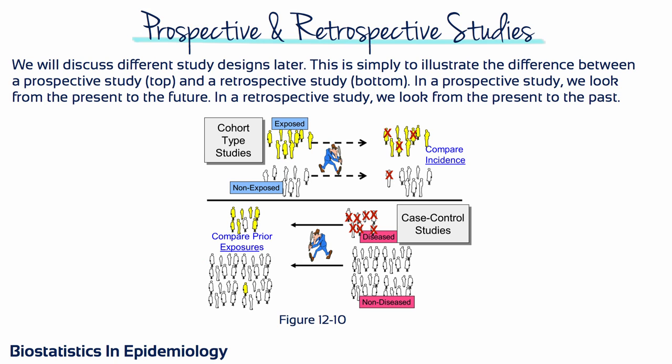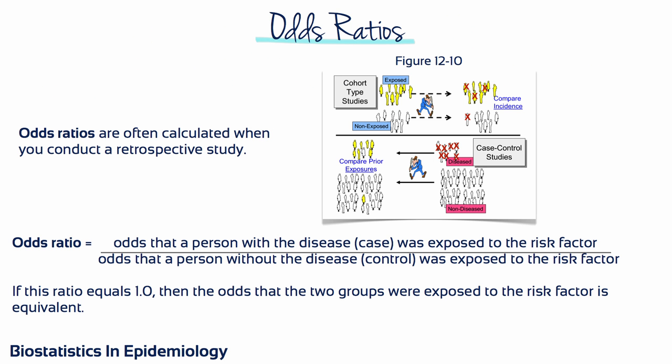In a case-control study, a group of people who already have the disease and a disease-free control group are identified, and we look back to see how many in each group were exposed to the risk factor in the past. Therefore, case-control studies are retrospective studies because we are looking back from the present. When retrospective studies are conducted, odds ratios are calculated. An odds ratio is the odds that a person with the disease was exposed to the risk factor divided by the odds that a person without the disease was exposed to the risk factor.